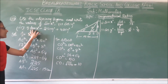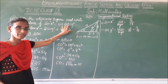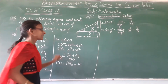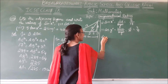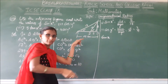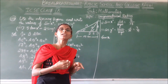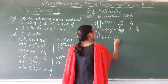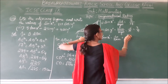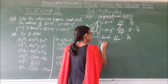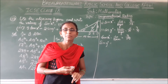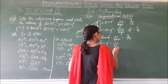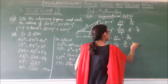Next, we have to find tan x and sin y. Tan x means perpendicular by base for triangle ABC. Perpendicular is 8 and base is 15, so tan x equals 8 by 15. Sin y means perpendicular by hypotenuse, and the perpendicular is 8, so sin y equals 8 by 10, which equals 4 by 5.